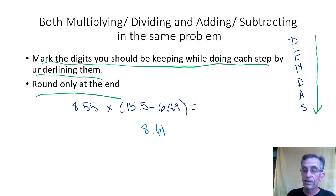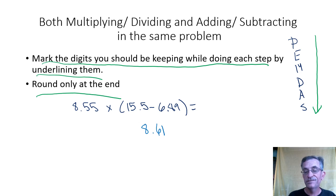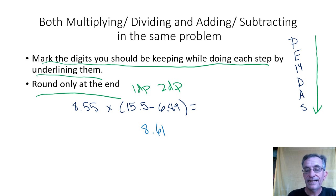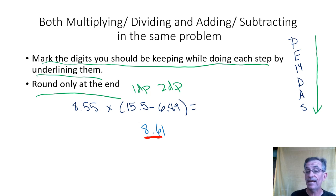I'm going to mark what I would be keeping if I did decide to round at this very minute. When you're subtracting, you go by decimal places. This number (15.5) has one decimal place, this number (6.89) has two decimal places. So I would mark where I would round — I'd underline the part I would keep. Going by the least amount, I would be keeping one decimal place. These are the digits I would write down if asked to round — you'd write down 8.6.